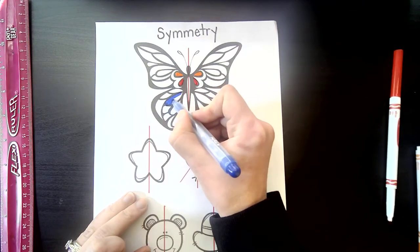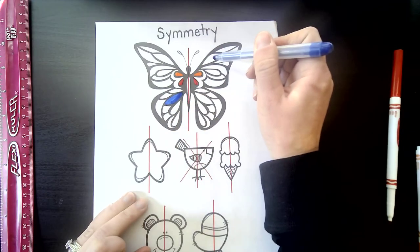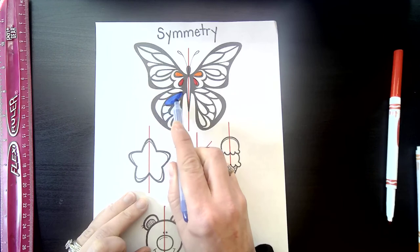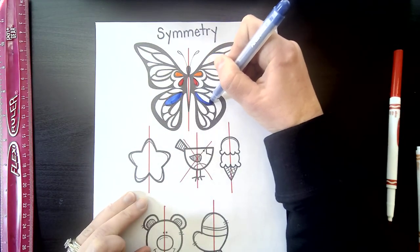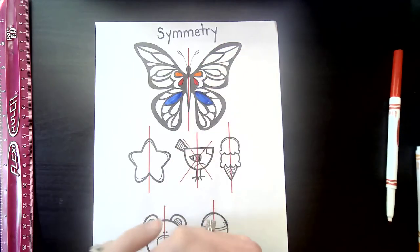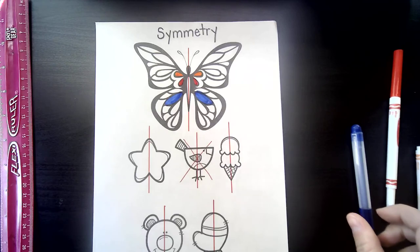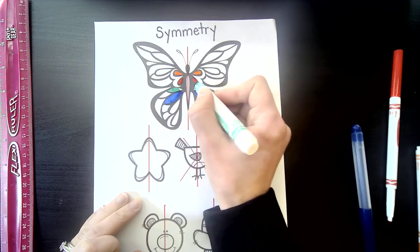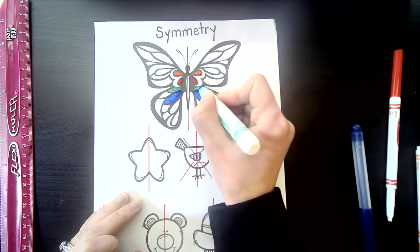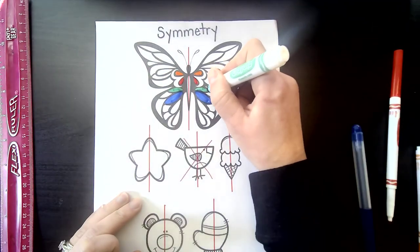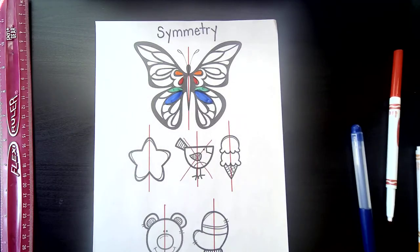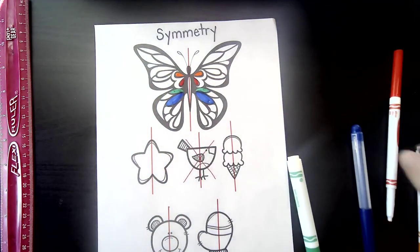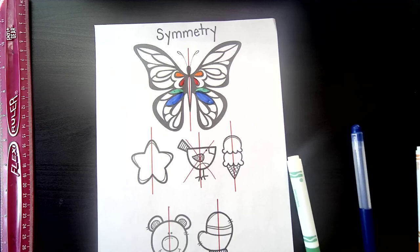So if I make this section blue, is this the section I need to make blue? Nope — remember, it's the exact same. So I go across the line of symmetry, find the same space, and that's what needs to be colored in blue. Are you guys seeing that? Even though I'm adding color, my butterfly is staying symmetrical — it's staying the same on both sides. I could continue coloring this whole butterfly and it would stay symmetrical, as long as whatever I colored on one side I colored on the other side. That is how you make something have symmetry.